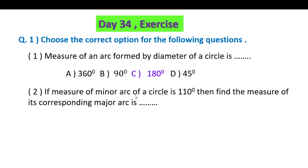Question 2: If measure of minor arc of a circle is 110 degrees, then find the measure of its corresponding major arc. Major arc is 360 minus the minor arc, so 360 minus 110 equals 250 degrees. The third option is correct: 250 degrees.